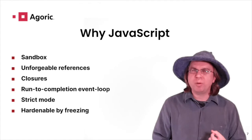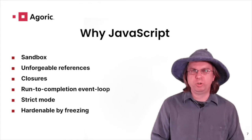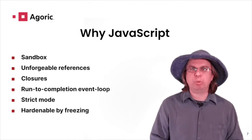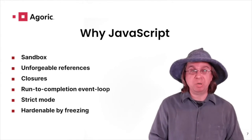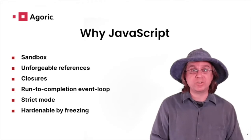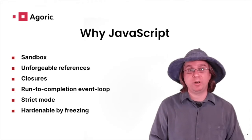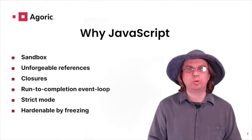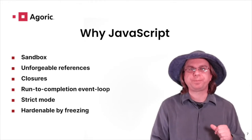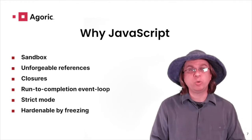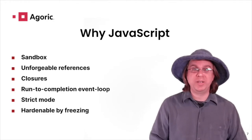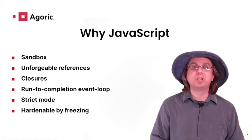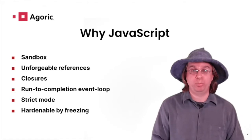JavaScript was not born suitable for co-tenant programs, but strict mode eliminates the most pernicious misfeatures like the arguments object or with blocks. And with strict mode, JavaScript gained the ability to harden objects, making them irrevocably tamper-proof.